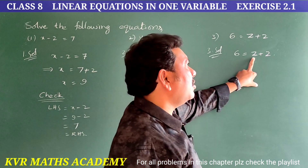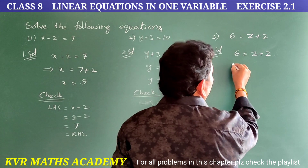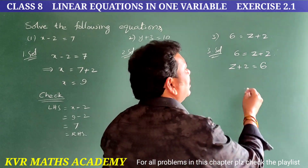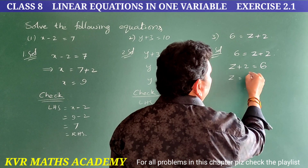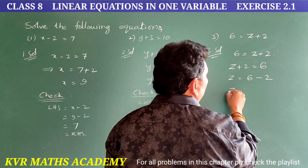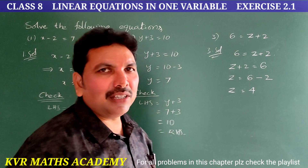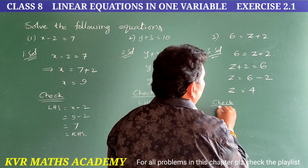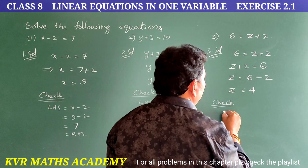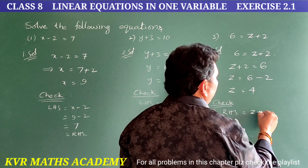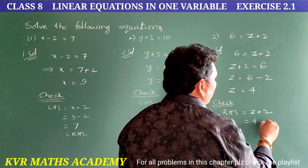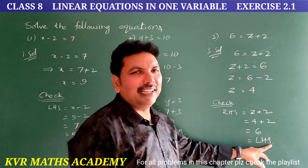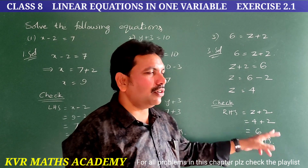Third solution. Given: 6 is equal to z plus 2. Rewrite as z plus 2 equals 6. Transposing gives z equals 6 minus 2, so z equals 4. Check: RHS equals z plus 2 equals 4 plus 2 equals 6, which equals LHS. Result is verified.